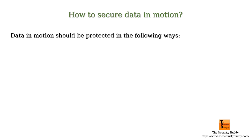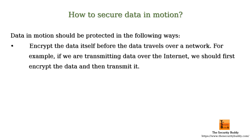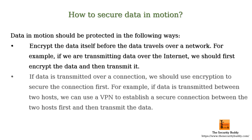Data in motion should be protected in the following ways. Encrypt the data itself before the data travels over a network. For example, if we are transmitting data over the internet, we should first encrypt the data and then transmit it. If data is transmitted over a connection, we should use encryption to secure the connection first. For example, if data is transmitted between two hosts, we can use a VPN to establish a secure connection between the two hosts first and then transmit the data.